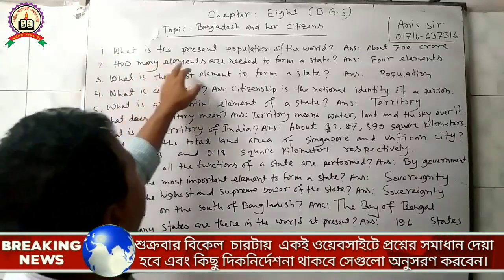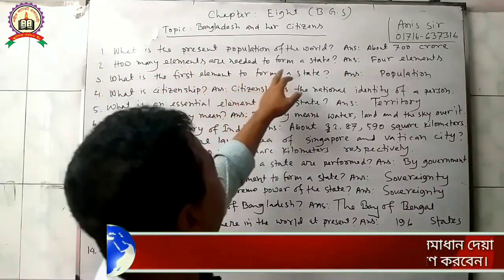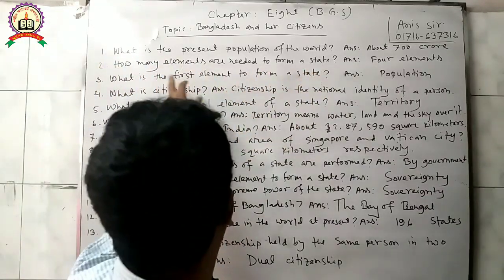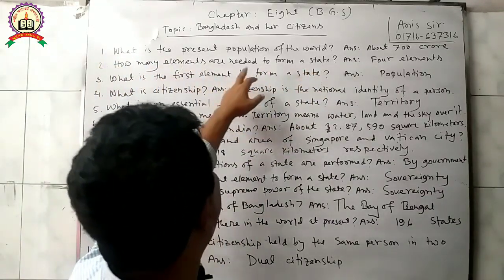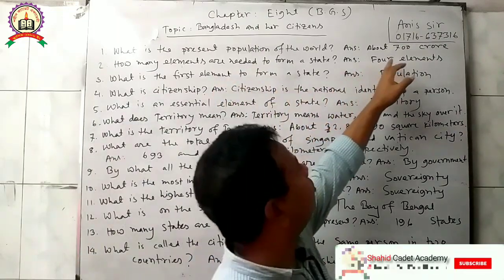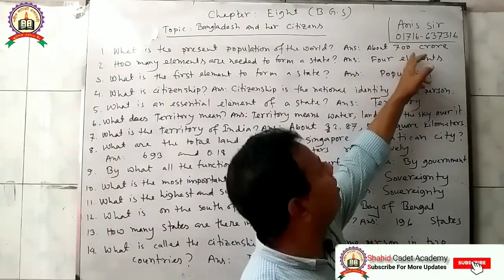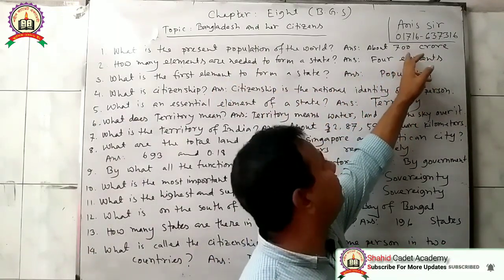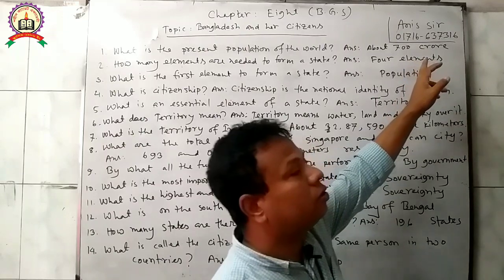Question 1: What is the present population of the world? Answer: The present population of the world is about 700 crore.